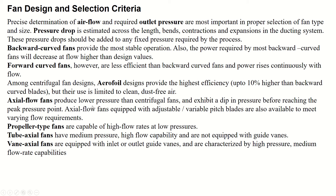Axial flow fans produce lower pressure than centrifugal fans and exhibit a dip in pressure before reaching the peak pressure point. They are available with adjustable variable-pitch blades to meet varying flow requirements. Propeller-type fans are capable of high flow rates at low pressures. Tube axial fans have medium pressure and high flow capability without guide vanes. Vane axial fans are equipped with inlet or outlet guide vanes and are characterized by high pressure and medium flow rate capabilities.